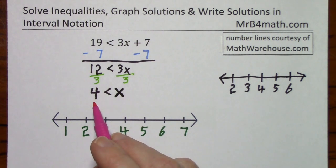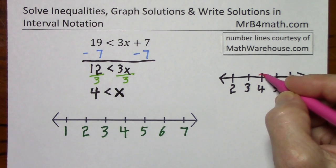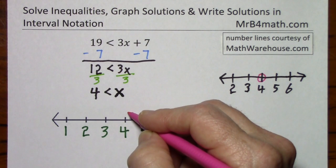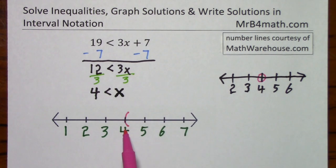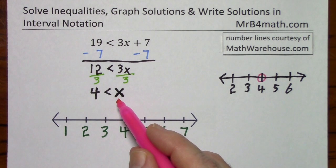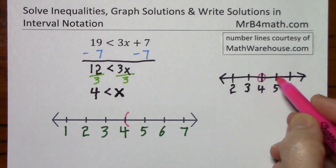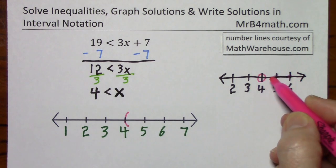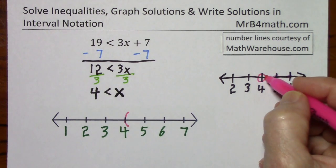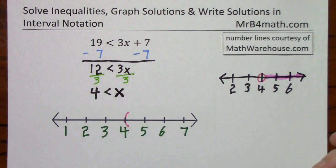For x greater than 4, some math books will have you use an open circle for the greater than symbol. My preference is to use a parenthesis, and many math books will use this method as well. This is also what we use for interval notation. These two symbols mean the same thing. Now x can be any value greater than 4 — it could be 5, 6, 4 and a half, or 200. So all we do is shade in this direction.